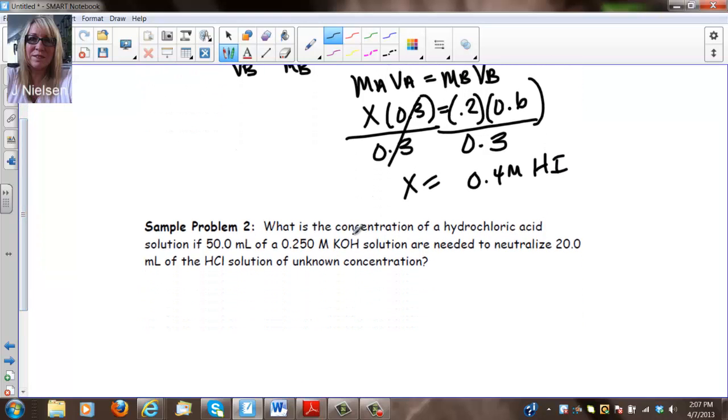Let's look at the next one. What is the concentration of hydrochloric acid solution? So again, I don't know my MA. That's what I'm finding. If 50 milliliters of 0.25 molar KOH. So this 'of' is a linking word. It's linking these two values together and we're talking about KOH. So this is going to be my VB and this is my MB, my molarity of my base, are needed to neutralize 20 mils. So that's going to be my VA and that was of the HCl.